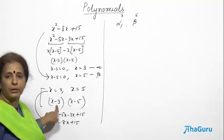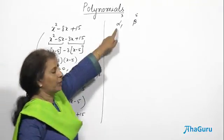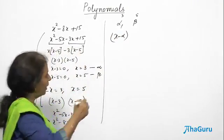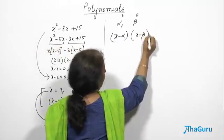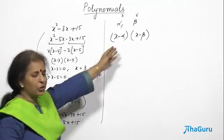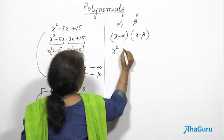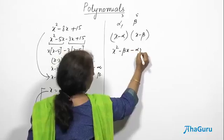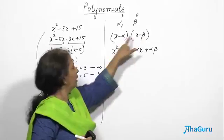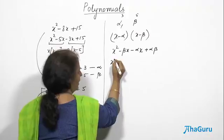If the root was 3, I found x minus 3 as the factor. If it was 5, I found x minus 5 as the factor. So if it is alpha, then x minus alpha is one factor, and x minus beta is the other factor. Multiplying: x squared, then minus beta·x minus alpha·x plus alpha·beta. Minus into minus makes it plus. So this is the general equation.